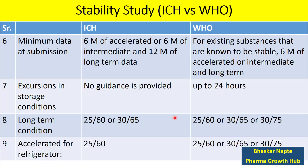For accelerated conditions for refrigerated products — if you intend to store the product at 5°C, that is the refrigerator condition, which becomes your long-term condition. So what is the accelerated condition for refrigerated products? According to ICH, it is 25°C/60% RH. However, according to WHO, either 25°C/60% RH, 30°C/65% RH, or 30°C/75% RH can be selected as an accelerated condition.